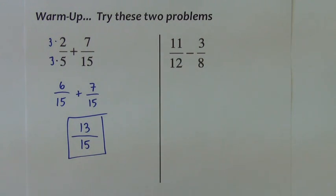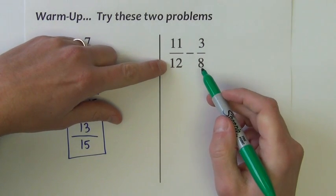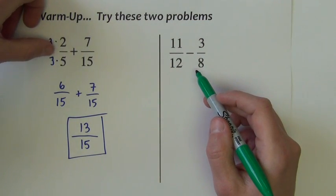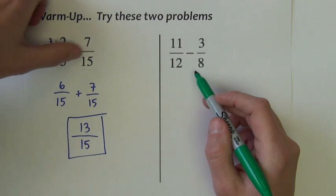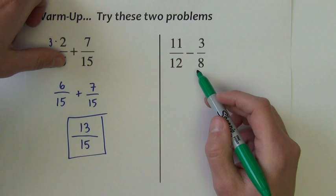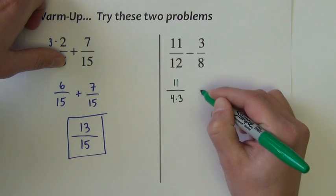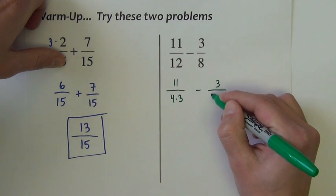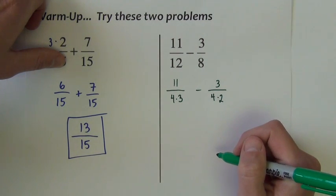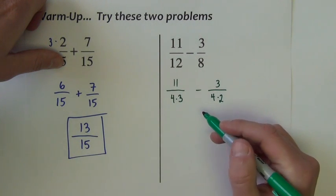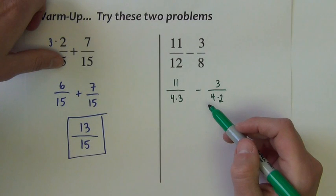Another way to do this, another way to maybe see this, is in the next one I'll kind of illustrate. 11 twelfths minus 3 eighths. It might be hard to find the common denominator between 12 and 8, or it's a little harder than this one. The first one, all I had to do was multiply the smaller number by something, and it made the bigger number. It doesn't really happen that way over here. So I might rewrite this as 11 over 12 is 4 times 3, minus 3 over 8 is 4 times 2. If I can factor the denominators, it makes it easier to see what pieces they already have in common, and what pieces they would need to make them common.